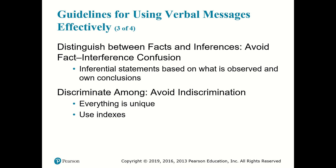This next part is somewhat ironic in a society that has trained us to hate the word discriminate — yet the textbook says we need to be discriminant. We need to discriminate among people and avoid indiscrimination. This seems completely opposite of what we've been told most of our lives. But everything is unique. We need to discriminate between people — recognizing they are not just a member of a group but also an individual. We cannot lump them into a group.